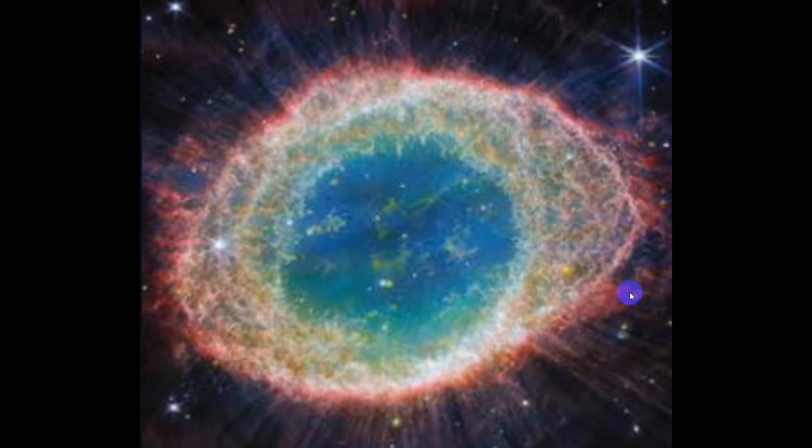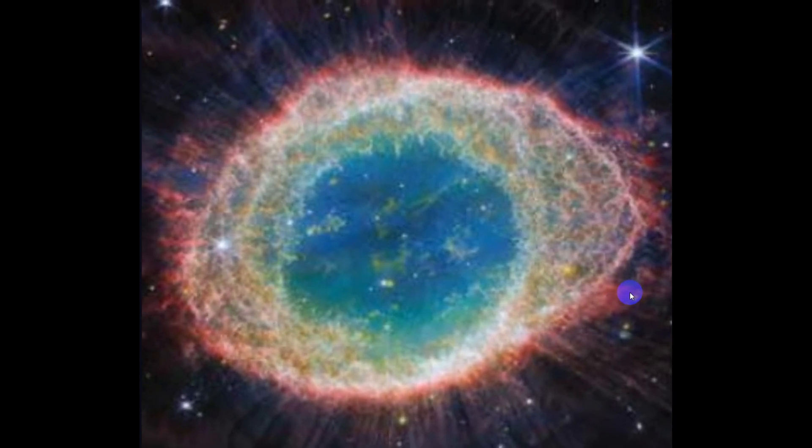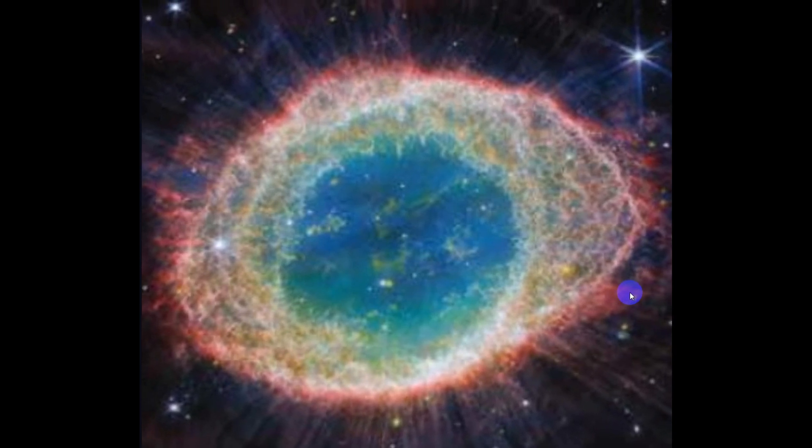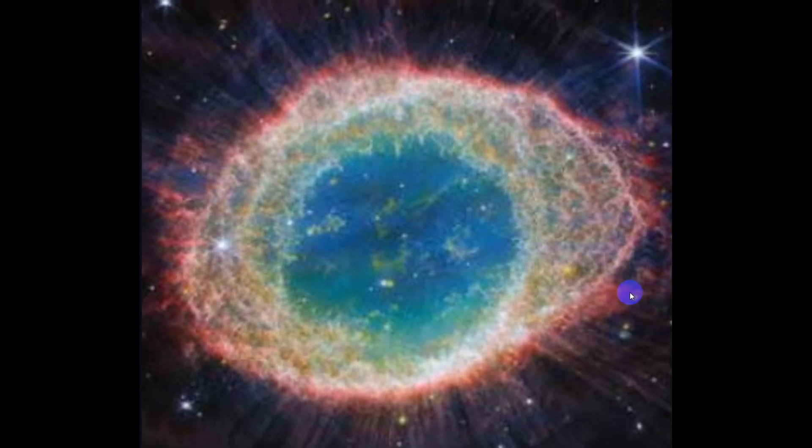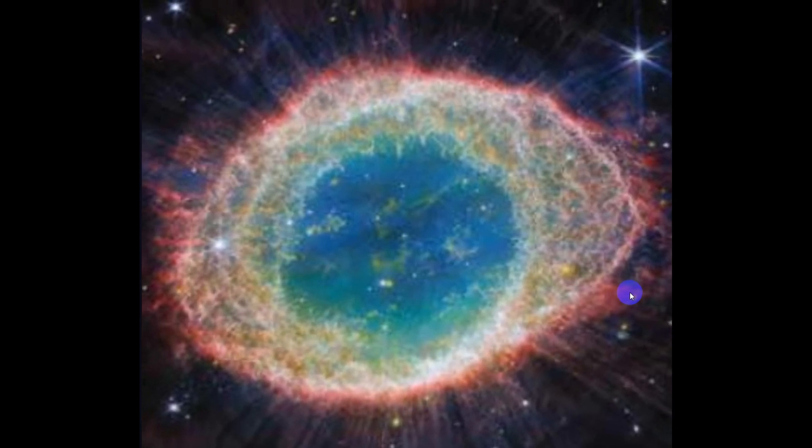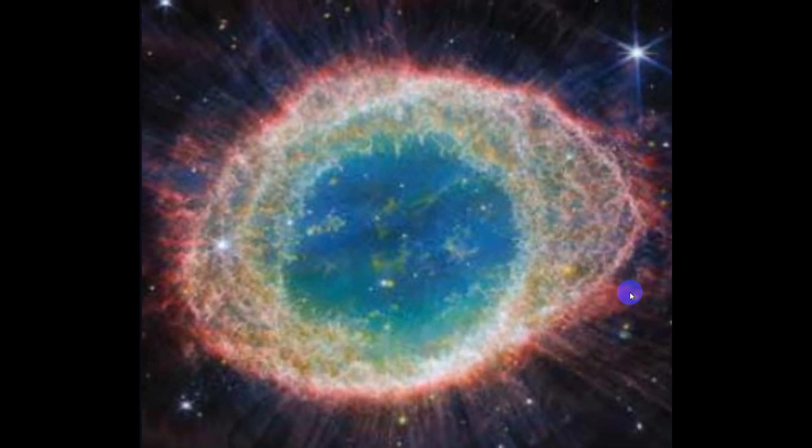At the top, the mid-infrared instrument revealed concentric features in the halo that crown the outer regions of the nebula. The spacing of these features suggests a hidden companion star orbits the central star every 280 years, sculpting the ring's outflow.